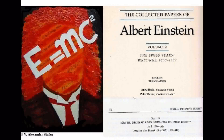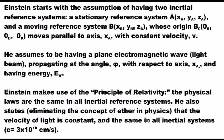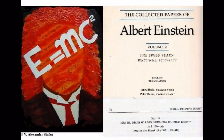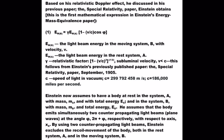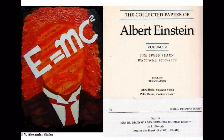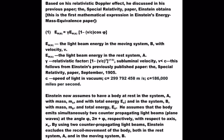Einstein starts with the assumption of having two inertial reference systems: a stationary reference system A, and a moving reference system B, whose origin moves parallel to axis X_A with constant velocity V. He assumes a plane electromagnetic wave — a light beam — propagating at an angle with respect to axis X_A, and having energy E_W. Einstein makes use of the principle of relativity and states that the velocity of light is constant and the same in all inertial systems. Based on his relativistic Doppler effect, discussed in his previous special relativity paper, Einstein obtains the first mathematical expression.